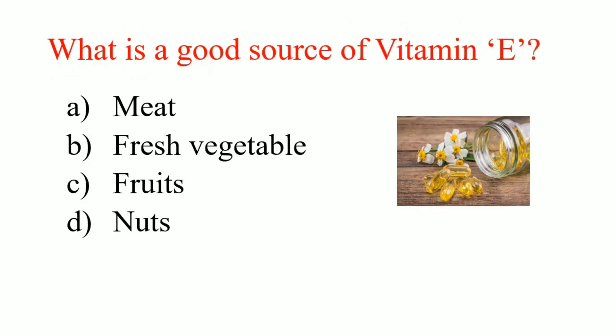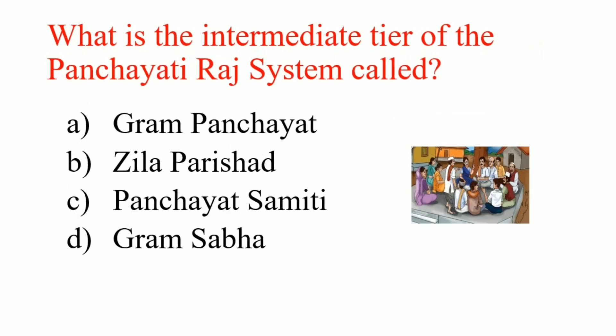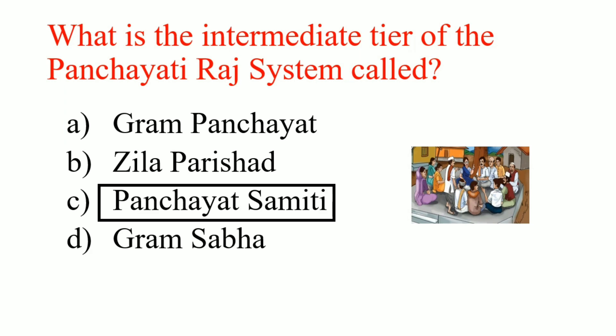What is a good source of vitamin E? Answer: Fresh vegetables. What is the intermediate tier of the Panchayati Raj system called? Answer: Panchayat Samiti.